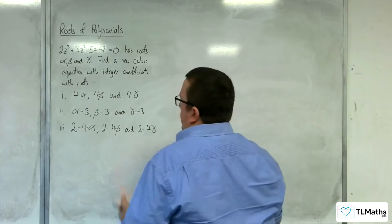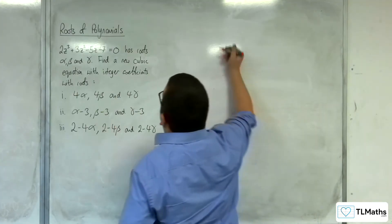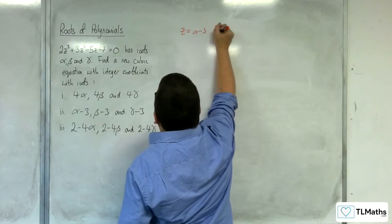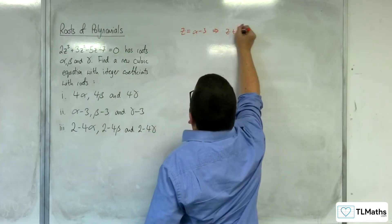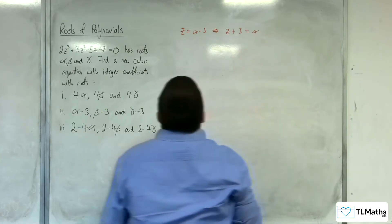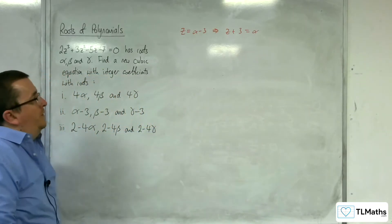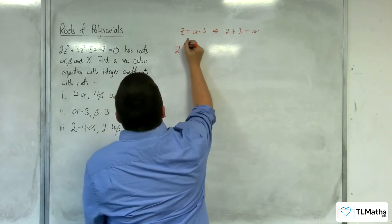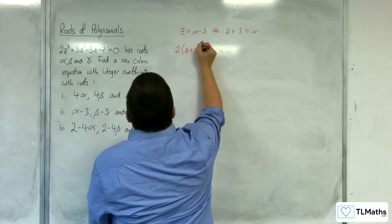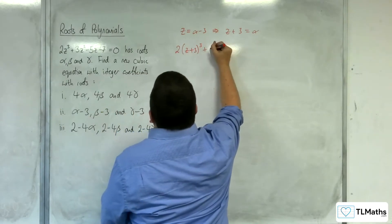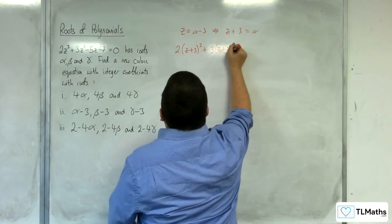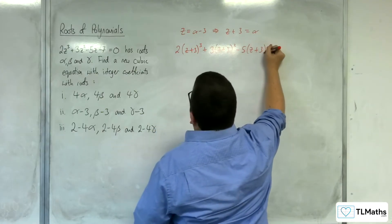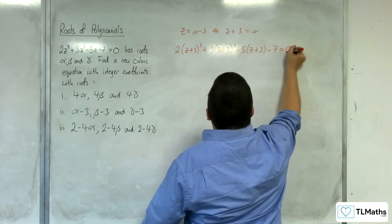So with the second one, we're subtracting 3 from each of the roots. So if z is equal to alpha minus 3, then z plus 3 must be equal to alpha. So I'm going to substitute each of the z's for z plus 3: 2 lots of z plus 3 cubed, plus 3 lots of z plus 3 squared, take away 5 lots of z plus 3, take away 7 equals 0.